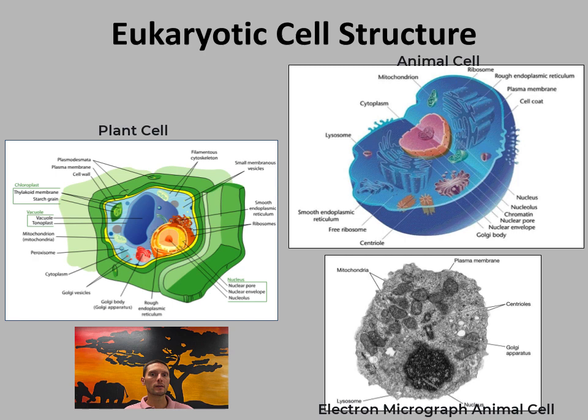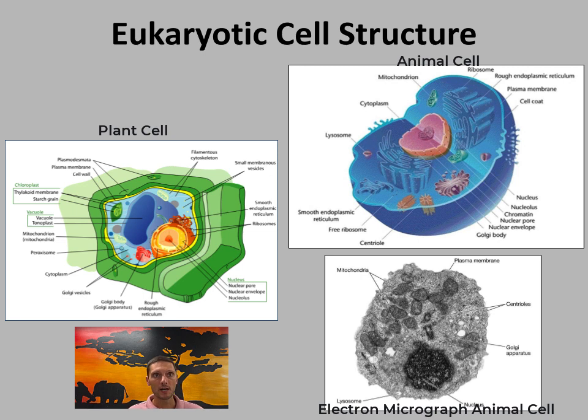The structure of eukaryotes is quite different from prokaryotes. They are a lot bigger, usually about 10 to 100 microns.